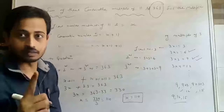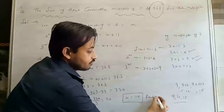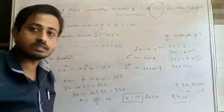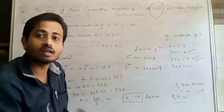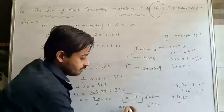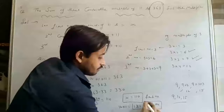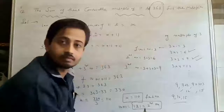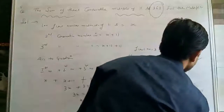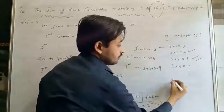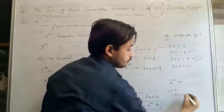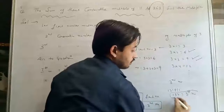X = 110 is the first number. The second number is X+11 = 110+11 = 121. The third number is 121+11 = 132. So the three consecutive multiples of 11 are 110, 121, and 132. Please make a note.